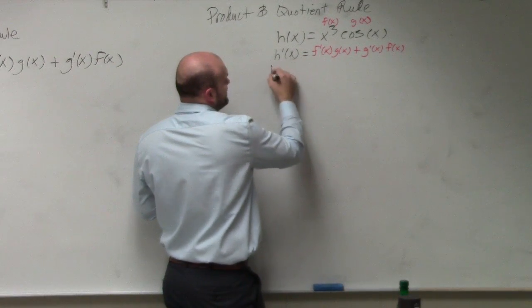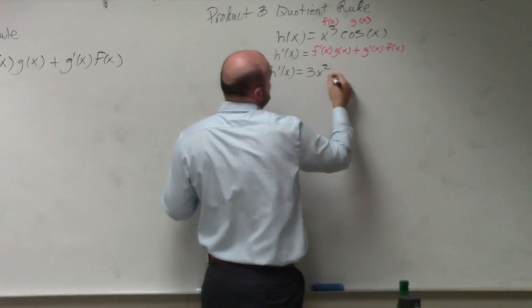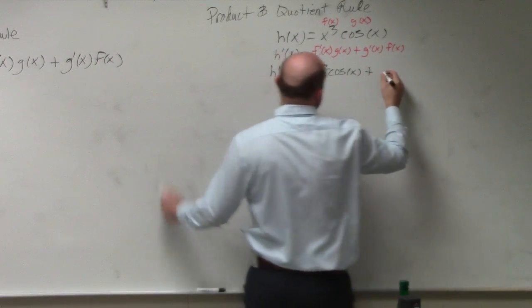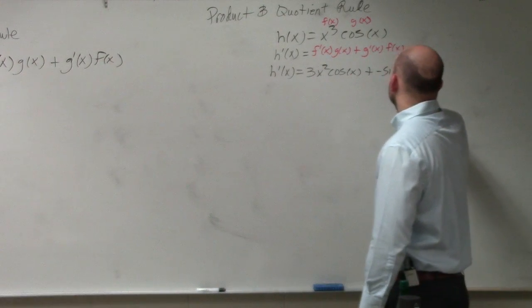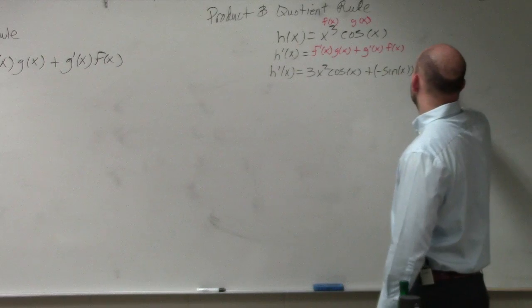So h'(x) is equal to 3x² times g(x), which is cosine of x, plus g'(x), which is negative sine of x, and that's going to be times x³.